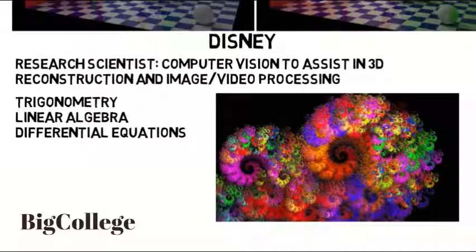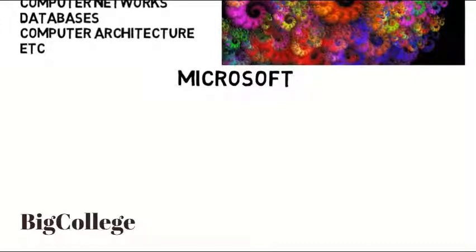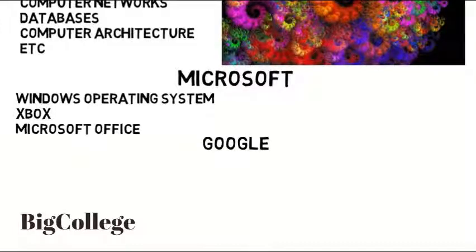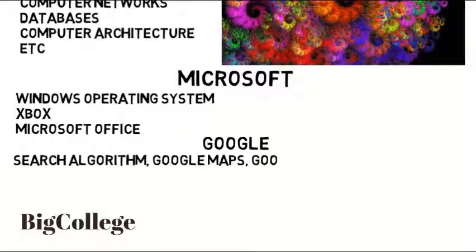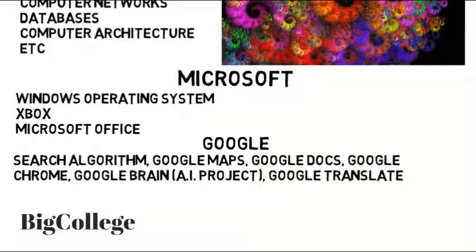There are many more fields and aspects of computer science, including computer networks, databases, computer architecture, and so many more. Computer science is a very broad field. Even if you get a job at Microsoft, you can work on the Windows operating system, the Xbox, Microsoft Office applications, and more — all different things at one company. Or you can work at Google, which hires lots of engineers but is known for hiring computer scientists. You can work on their search algorithm, Google Maps, Google Docs, Google Chrome, Google Brain and their artificial intelligence programs, Google Translate, and so much more. Even within one company you can constantly be doing different things.